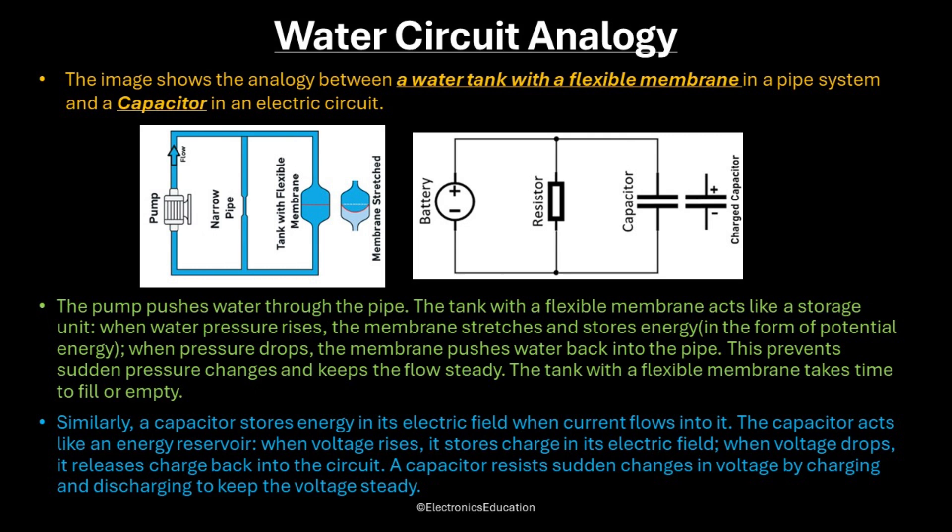Now let's try to compare the electric circuit with a water pipe system. The image shows the analogy between a water tank with a flexible membrane in a pipe system and a capacitor in an electric circuit. In the water pipe system, the pump pushes water through the pipe. The tank with a flexible membrane acts like a storage unit. When water pressure rises, the membrane stretches and this stretched membrane stores energy in the form of potential energy. When pressure drops, the stretched membrane pushes water back into the pipe.